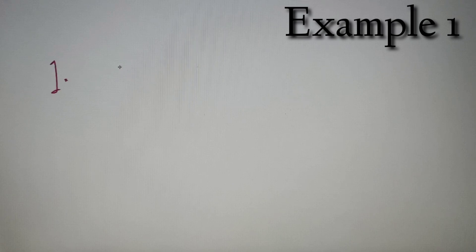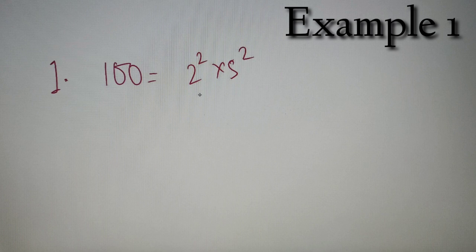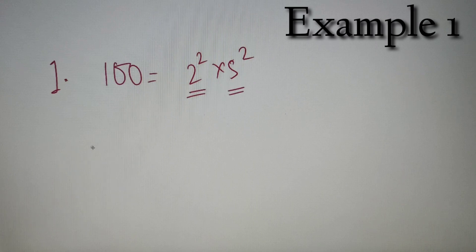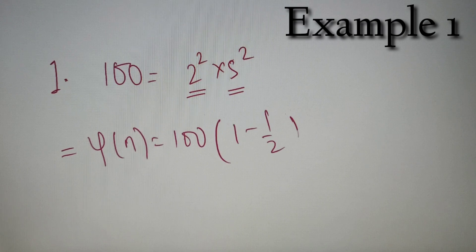For our first example, we have to find the Euler's Totient value of 100. First, we prime factorize 100. Since 2² = 4 and 5² = 25, and 4 × 25 = 100, the prime factorization of 100 is 2² × 5². Applying the formula, φ(100) = 100 × (1 − 1/2) × (1 − 1/5). Now we just have to calculate this value.